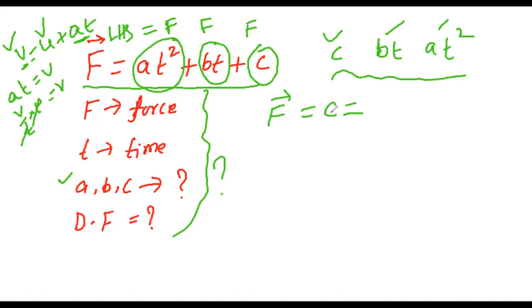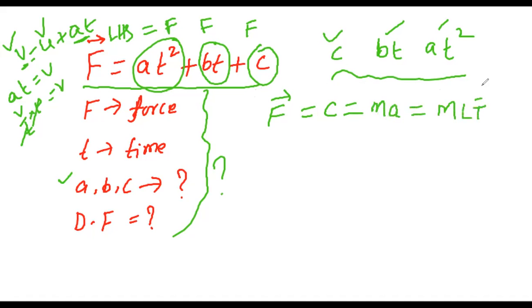Force equals C, right? Whatever the dimensional formula of force, C is also the same. According to this equation, every term represents force. We already know force equals MA, and its dimensional formula is MLT⁻². Why? Because M is the dimension for mass, and acceleration is LT⁻².